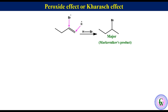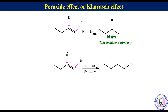In contrast, in the presence of peroxide, the proton of HBr goes to the carbon of the alkene with less number of hydrogen atoms, and bromine goes to the carbon with more number of hydrogen, to produce 1-bromobutane as the major product. This is called the anti-Markonikov product. This reversal of the regiochemistry of addition of HBr to an unsymmetrical alkene in the presence of peroxide is called the peroxide effect or Kharasch effect.